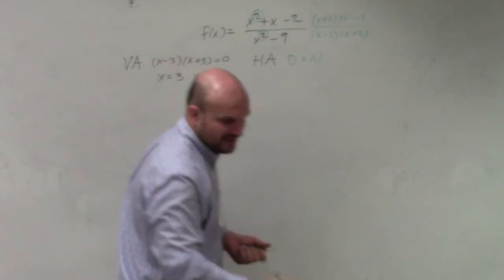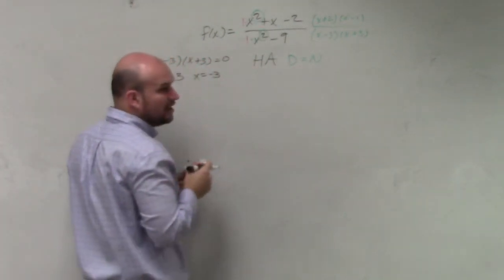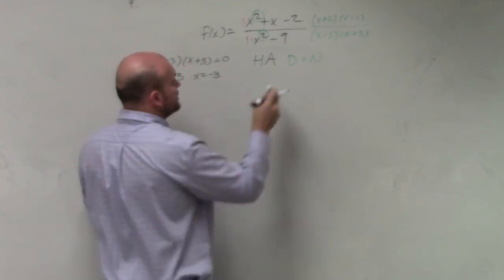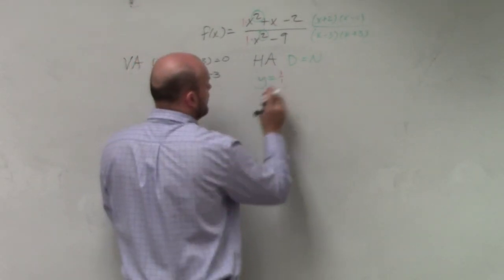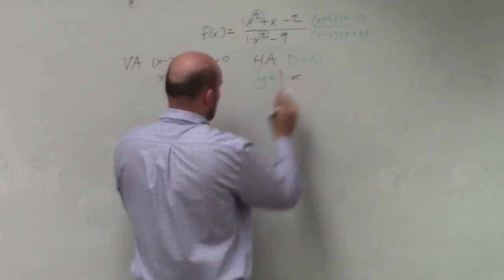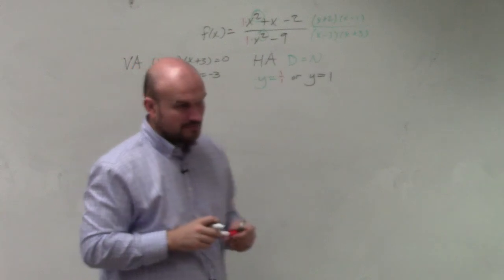So what we do for that is we take the ratio of the leading coefficient over the leading coefficient. So y equals 1 over 1, or we could just write it as y equals 1. OK?